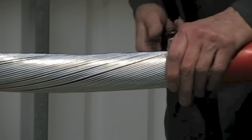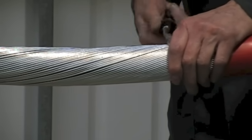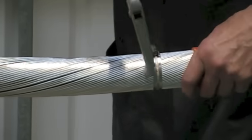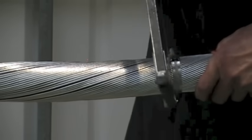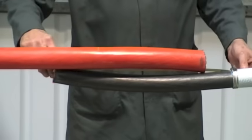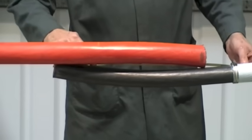Now mark the armour wires, score with a hacksaw and remove.